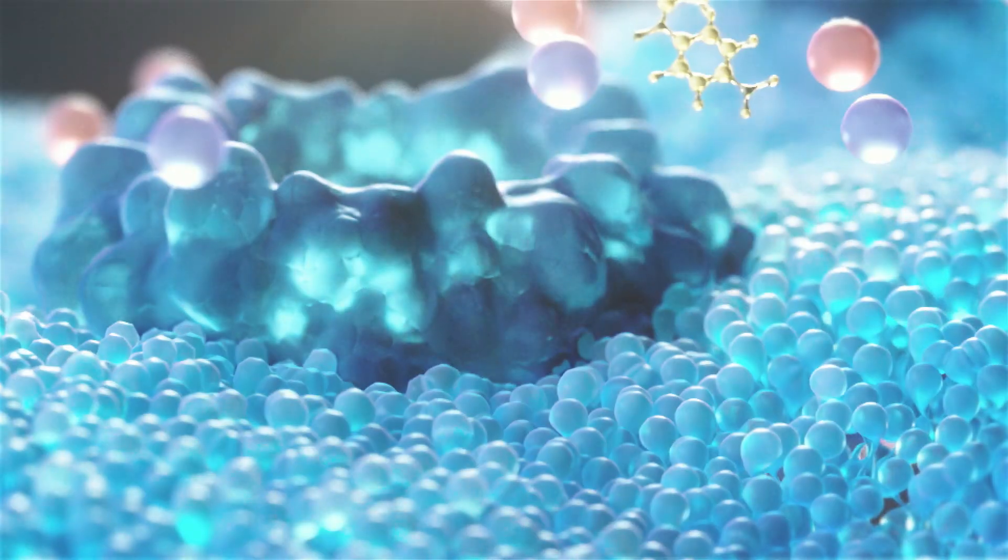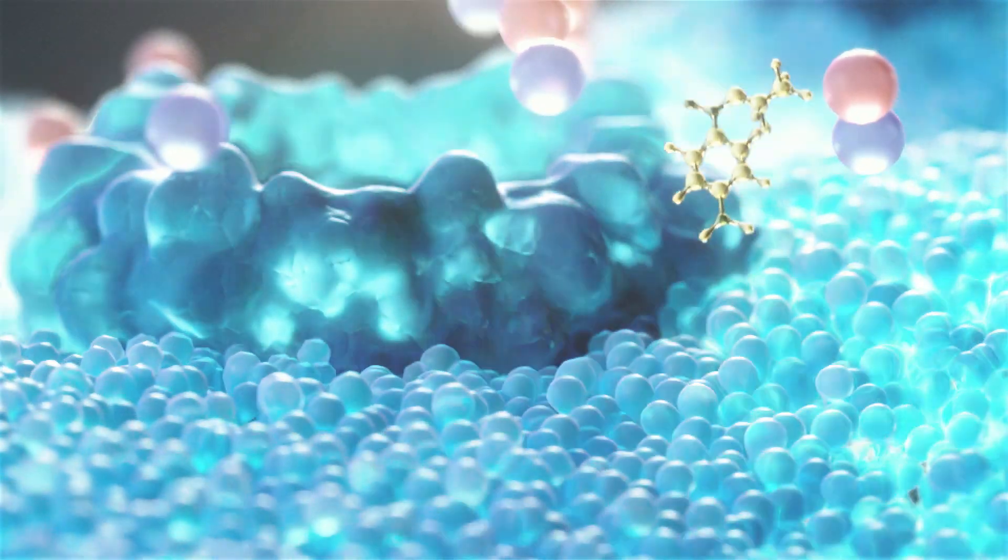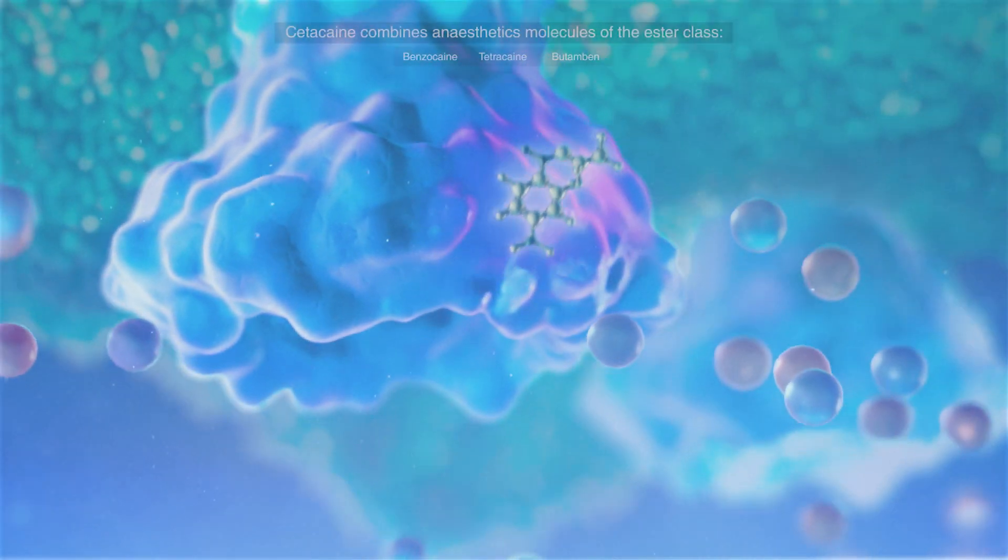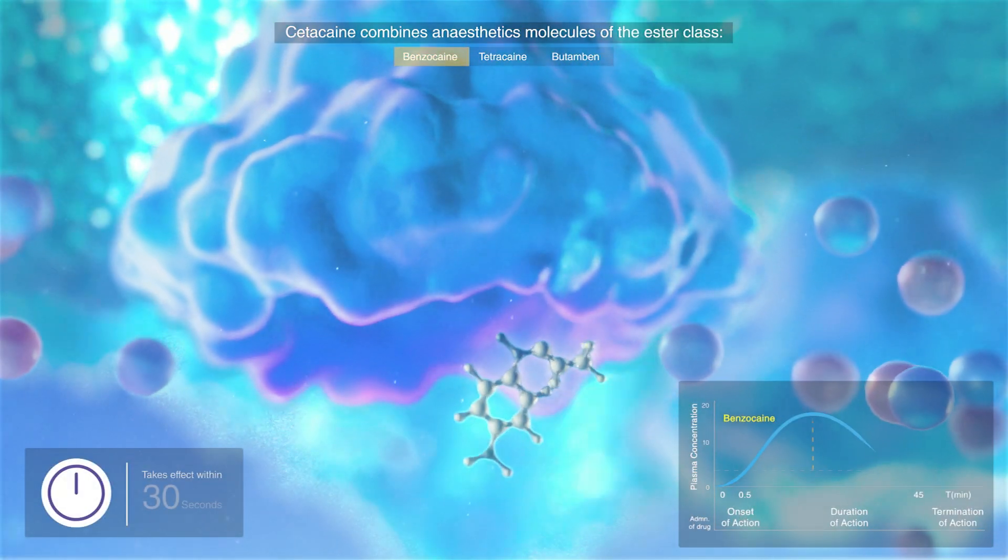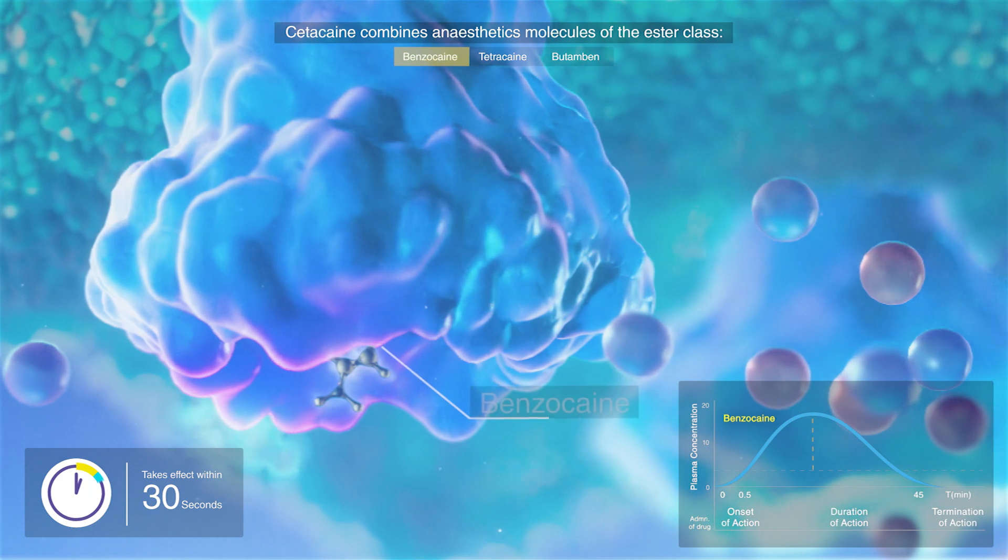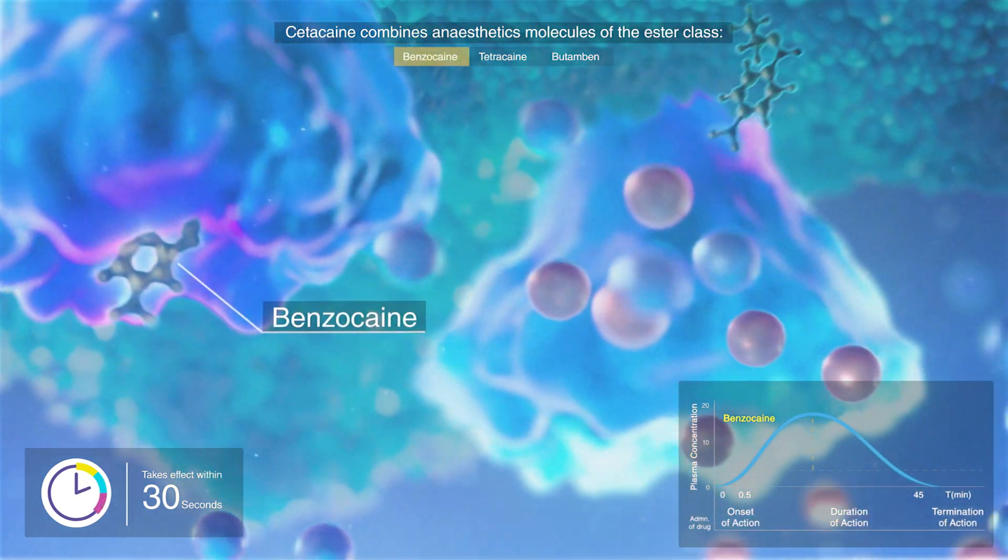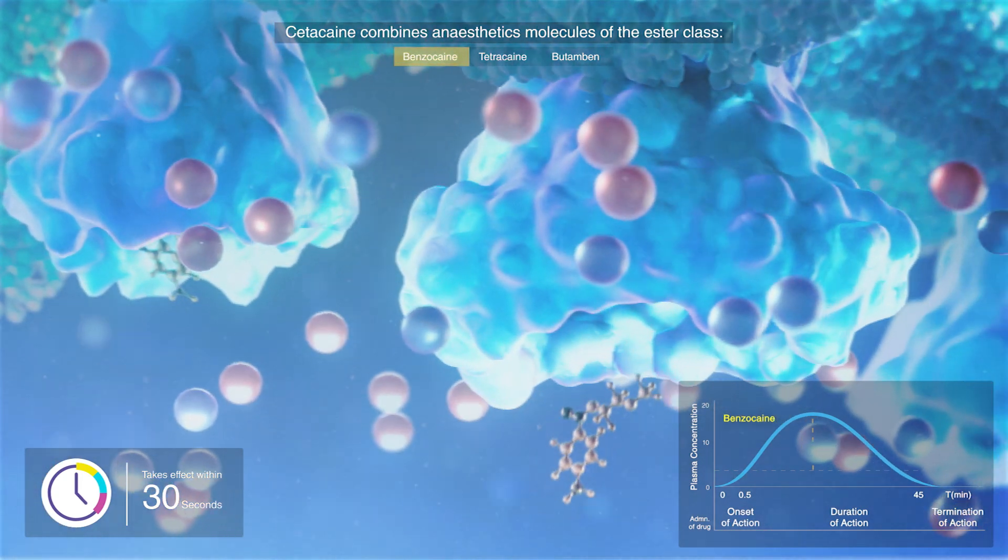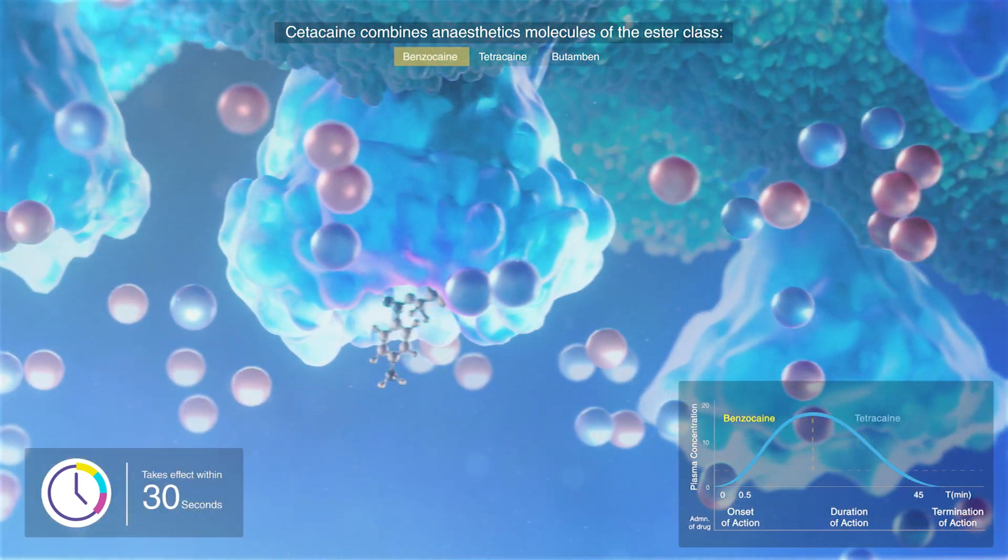Firstly, benzocaine binds to sodium channels and reversibly stabilizes the neuronal membrane, which decreases its permeability to sodium ions, inhibiting the depolarization of the neuronal membrane, thereby blocking the initiation and conduction of nerve impulses in just 30 seconds, lasting for the first 20 minutes.